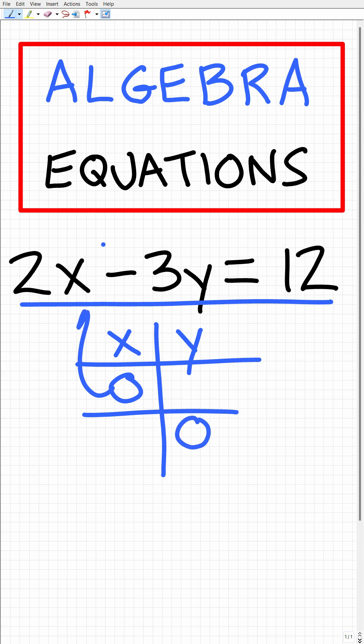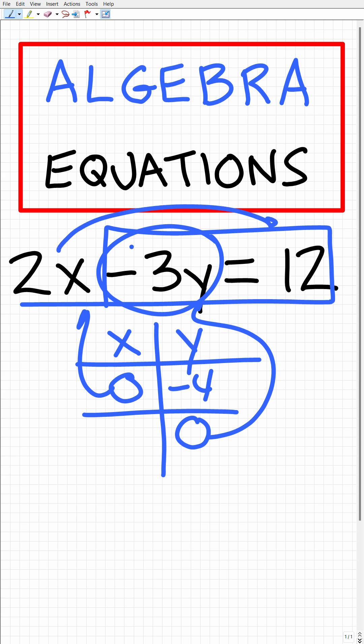When x equals 0, we have 2 times 0, which is 0, so we solve this equation and get y equals negative 4. When y is 0, this part goes away because negative 3 times y is 0. Now we solve 2x equals 12, so x equals 6.